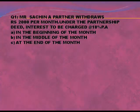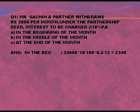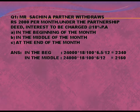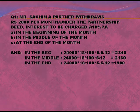Now for numerical questions: Mr. Sachin, a partner, withdraws two thousand per month. Interest is charged at 18% per annum. For the whole year he withdraws 24,000. At the beginning of the month: 24,000 × 18/100 × 6.5/12. At the middle: 24,000 × 18/100 × 6/12. At the end: 24,000 × 18/100 × 5.5/12.